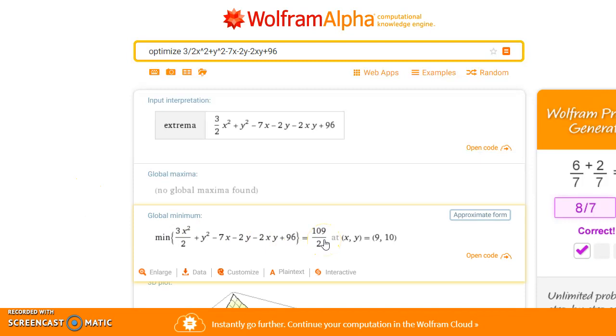So we can look at our global minimum, which occurs at x,y equals 9, 10, and then we get a function value of 109 over 2. Or if we click approximate form, we can get the approximate form there of 54.5.